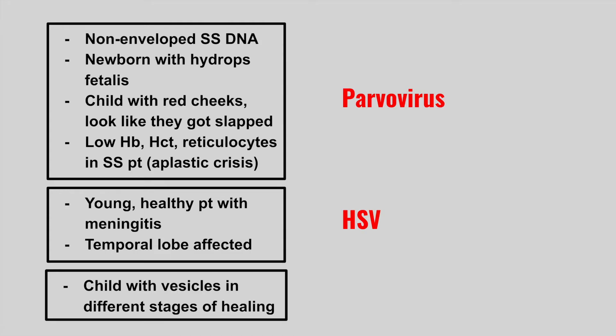The next patient has a child with vesicles in different stages of healing. This is varicella, also known as chickenpox. It's very contagious, so they might say everyone in daycare got affected, and there are these really itchy vesicles in different stages of healing.